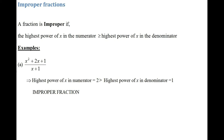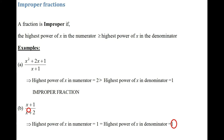Another example: x plus 1 over x plus 2. The highest power of x in the numerator is 1, and the highest power of x in the denominator is also 1. Remember, if the highest power of x in the numerator is greater than or equal to the highest power in the denominator, we have an improper fraction.